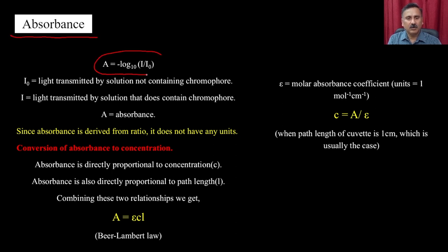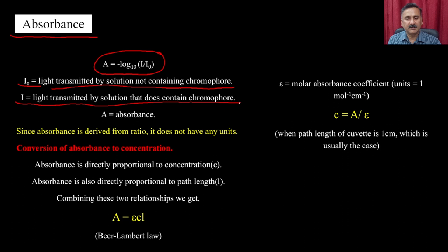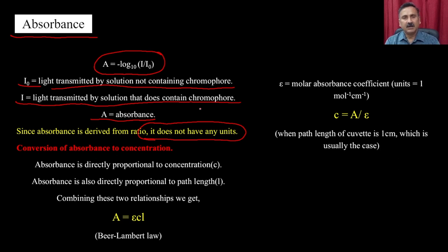Absorbance A equals minus log I/I₀, where I₀ is the light transmitted by the solution not containing the chromophore, and I is the light transmitted by the solution that does contain the chromophore. Absorbance is a ratio and therefore has no unit — it is a unitless property. This is important: even in exams they ask for the unit of absorbance, and the answer is that it is unitless.